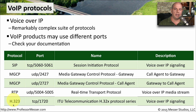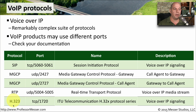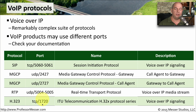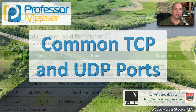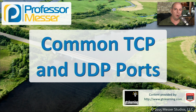Lastly, there is another signaling protocol you may use on your Voice over IP network. You'll either use SIP or H.323 — the H.323 standard signaling protocol uses TCP port 1720 to communicate signaling information across the network.